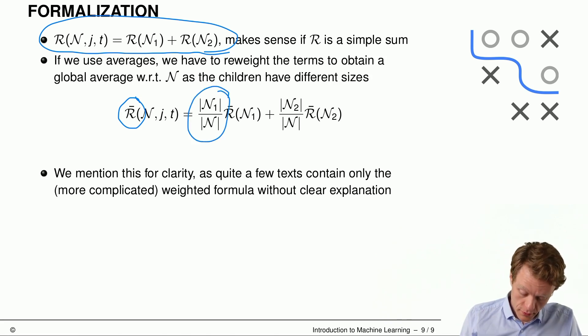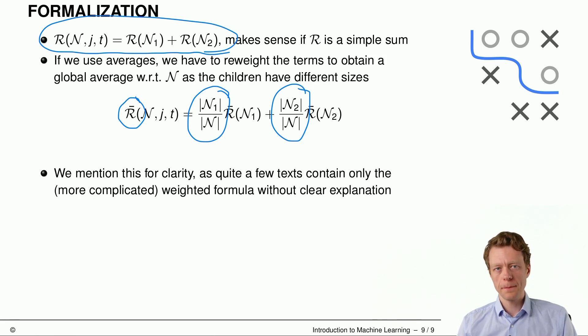But we have to weight these risks with the proportion of observations in the two nodes. So if a node has more observations, then the weight of the risk in this node should be higher than in the other node. We mentioned this here for clarity more than because we will make a lot of use by this. Because quite a few texts only contain this more complicated weighted formula without clearly explaining what this is and why we need this. And so to make you aware of this, we've made this slide. And so if you see this weighted formula, then you already know that what comes after the weights. So these R bar n1 and R bar n2 are mean risks and not sum risks.